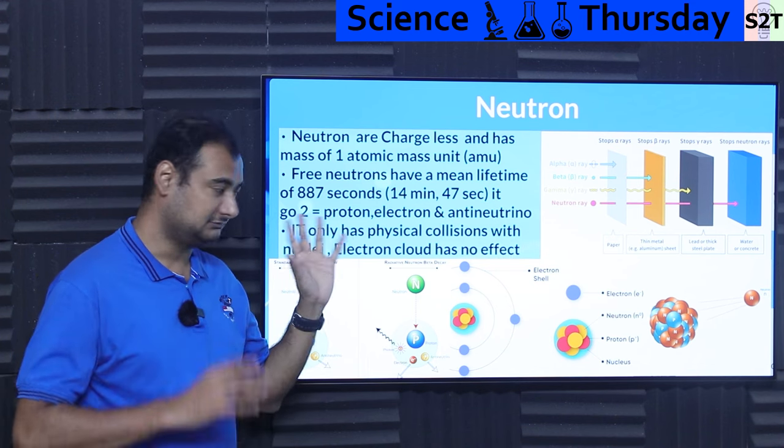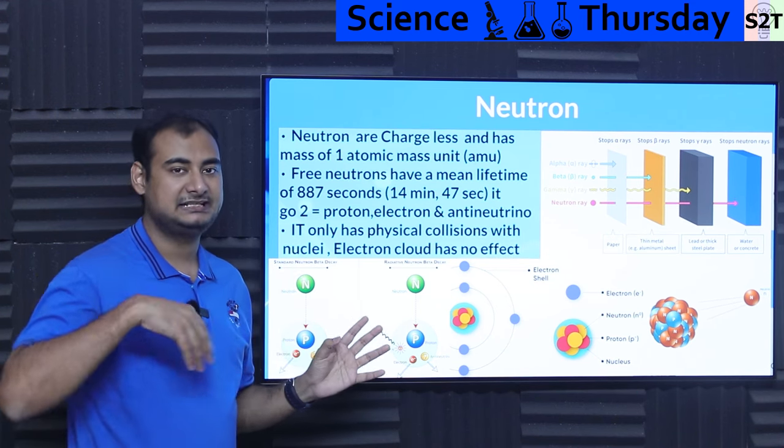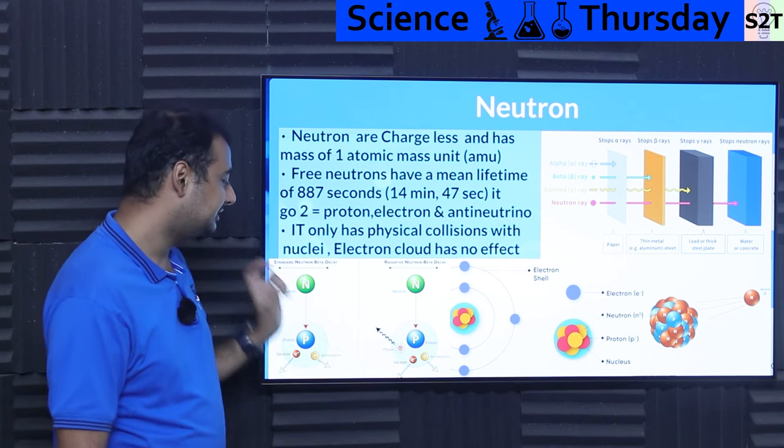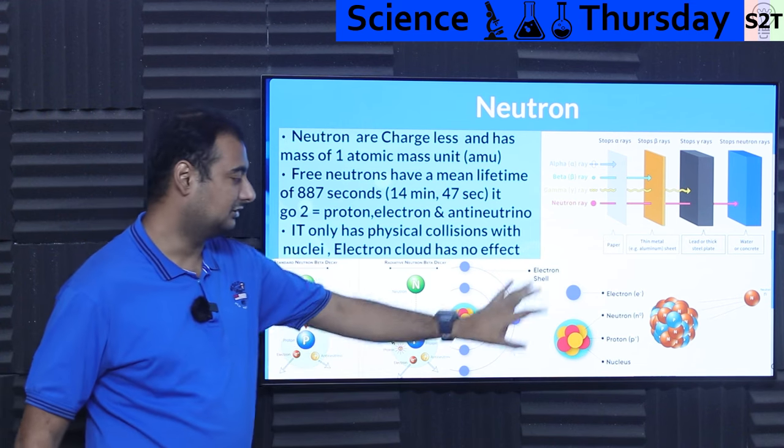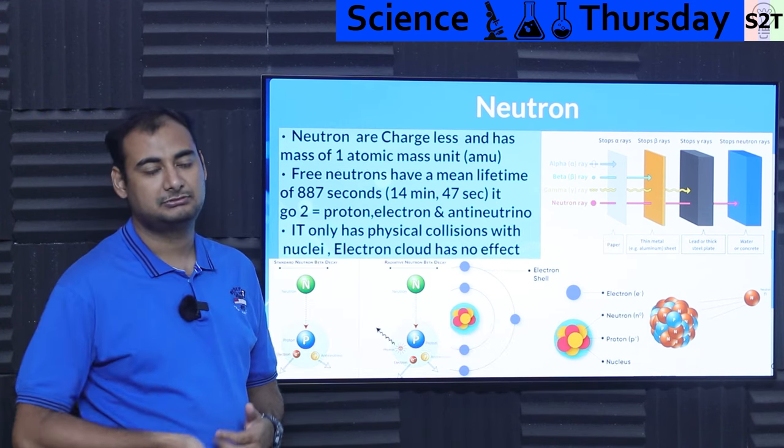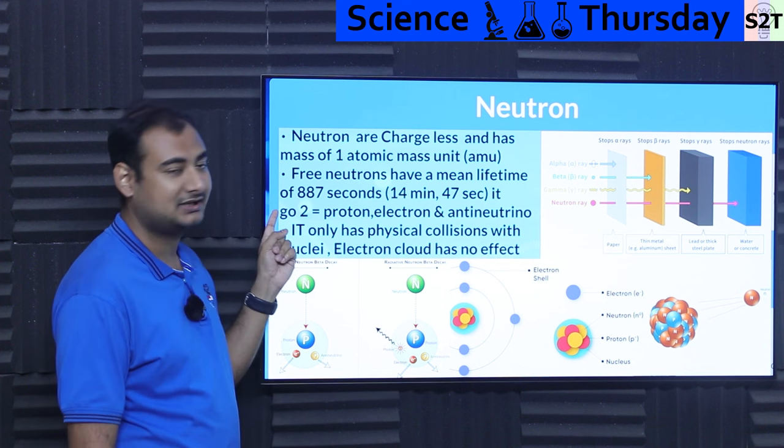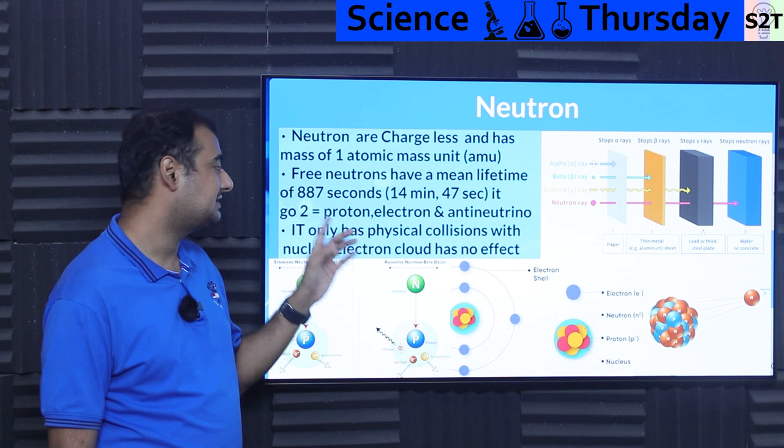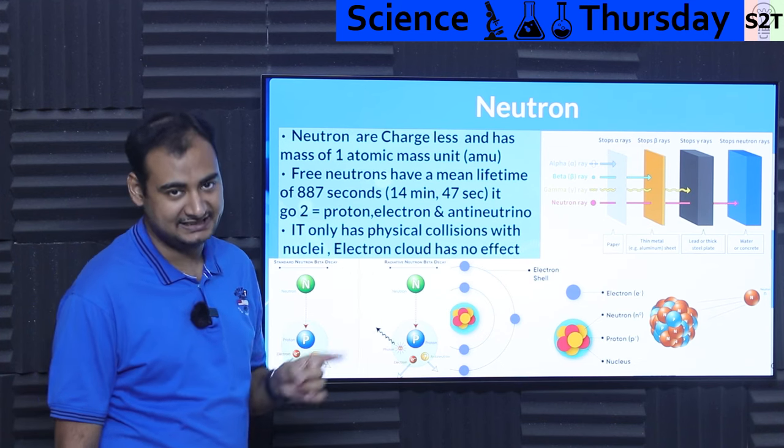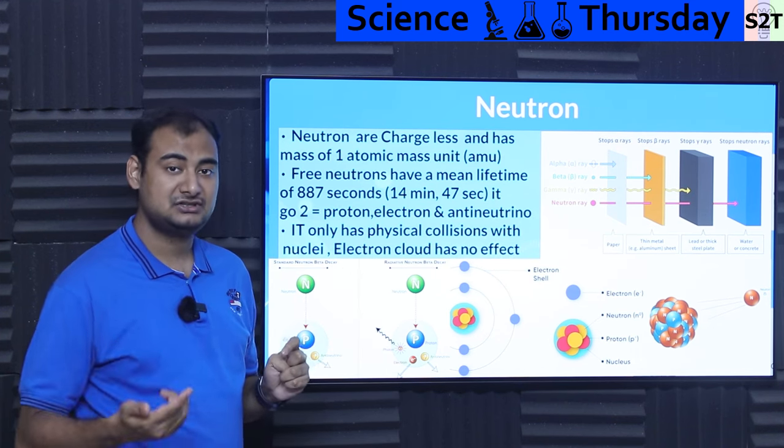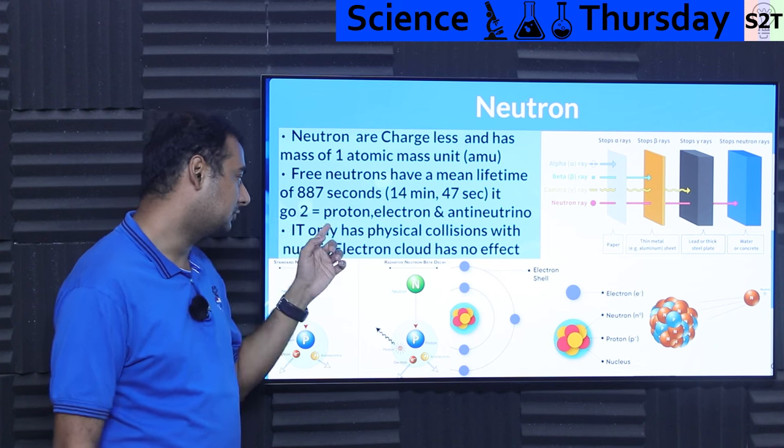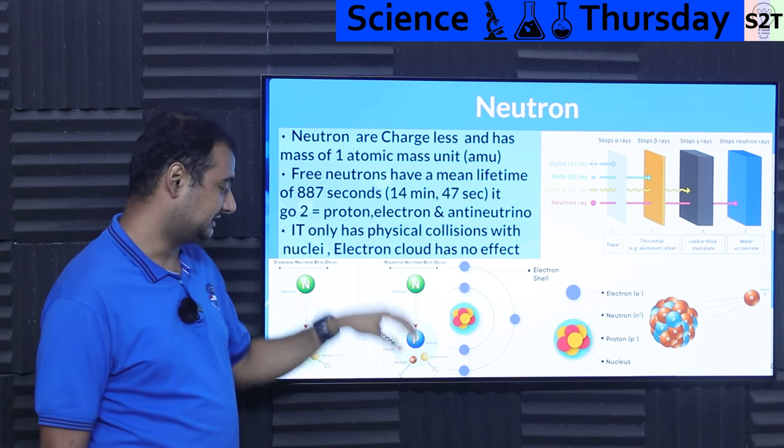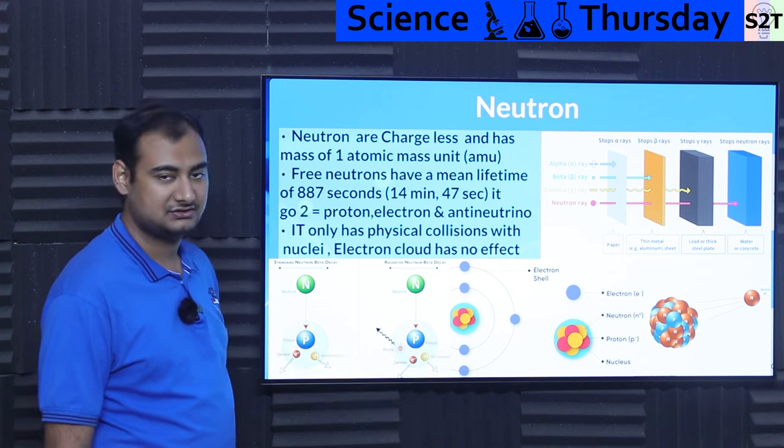Now however while that is true that it does not care, it has an internal clock so to say. So the moment a neutron leaves the safety of the nucleus, it starts to create a downward spiral. And that down spiral is 887 seconds. Meaning that puppy is only gonna last for 14 minutes 47 seconds. After that it's gonna change into other things like proton, electron, antineutrinos. Basically it's gonna change into other stuff.